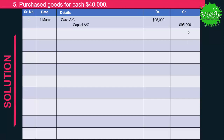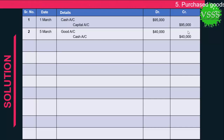Transaction 2: Purchased goods for cash $40,000. Two accounts are affected: goods and cash. Goods belong to assets and since they increase, the goods account is debited by $40,000. Cash is decreasing, so the cash account is credited by $40,000.